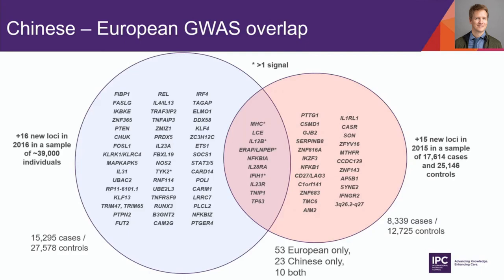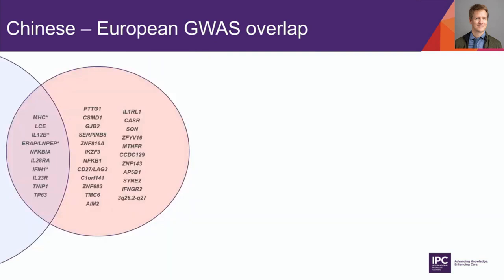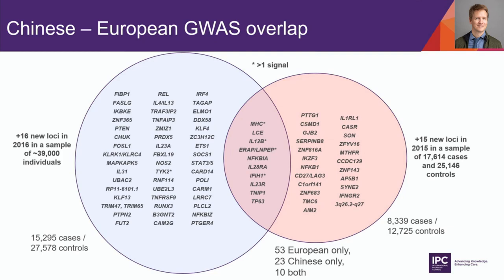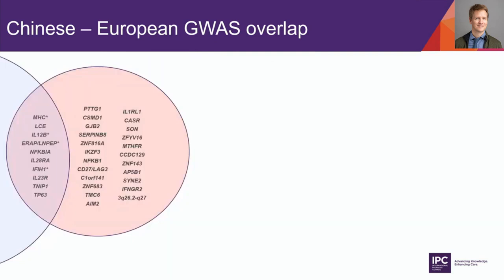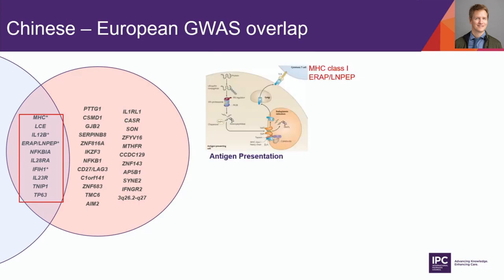What about all the other genetic loci not in the MHC class I region? Using data from the two most powerful genetic studies — the European population and the Chinese population — we have 86 genetic risk loci predisposing to psoriasis. There are more on the Caucasian side because there are more samples with more power to detect them. But in the Chinese population there are at least 23 loci found only in that population, and about 10 that overlap between both.